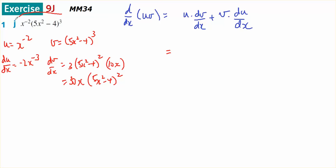Putting that together, the derivative of this is going to be u times dv dx. So, 30x times x to the minus 2. That's x times 1 on x squared. Cancel, cancel equals 1 on x.